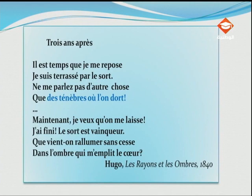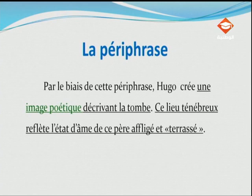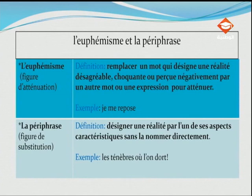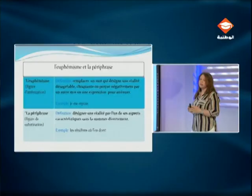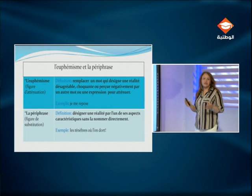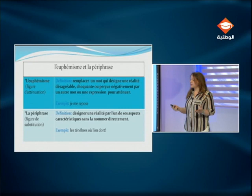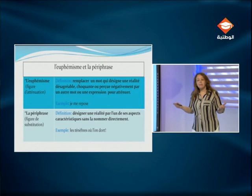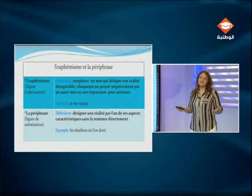Récapitulons. L'euphémisme est une figure d'atténuation. Sa définition : remplacer un mot qui désigne une réalité désagréable, choquante ou perçue négativement par un autre mot ou une expression pour atténuer. Exemple : « je me repose ». D'autres exemples d'euphémisme pour désigner l'idée de la mort : « partir », « s'en aller », « s'éteindre ». Pour parler de quelqu'un qui est congédié ou renvoyé, je peux dire : « il a été remercié ».